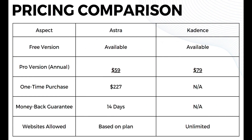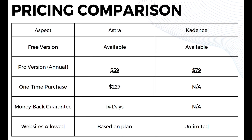Moving on to the pricing comparison — as you can see on this table, both Astra and Cadence offer a free version. For the pro version, paid annually, Astra costs $59 per year while Cadence costs $79 per year. For one-time purchases, Astra offers a $227 lifetime option while Cadence does not offer a one-time purchase. Astra also offers a 14-day money-back guarantee while Cadence does not. The number of websites allowed by Astra is based on plan, while Cadence allows unlimited websites.